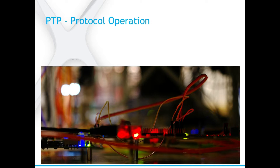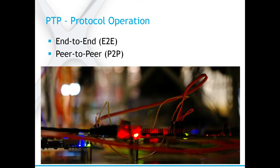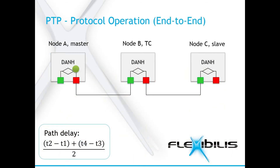PTP transparent clock has two operation modes: end-to-end and peer-to-peer transparent clocks. In transparent clock end-to-end mode, the master and slave work the same way as they do without TC. There can be any number of transparent clocks between the master and the slave. There are two possible clock operating modes that affect how the event messages are sent: one-step clock and two-step clock. In one-step clock the time information is sent in a single sync message, and in two-step mode the time information is sent in a separate follow-up message after the sync message.